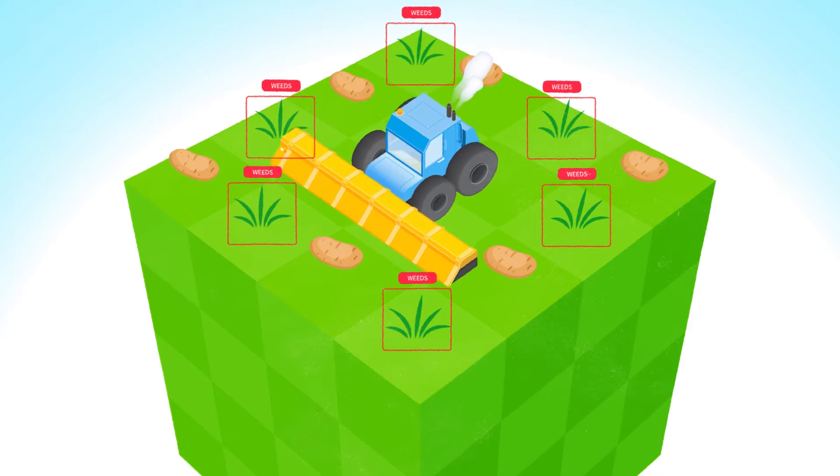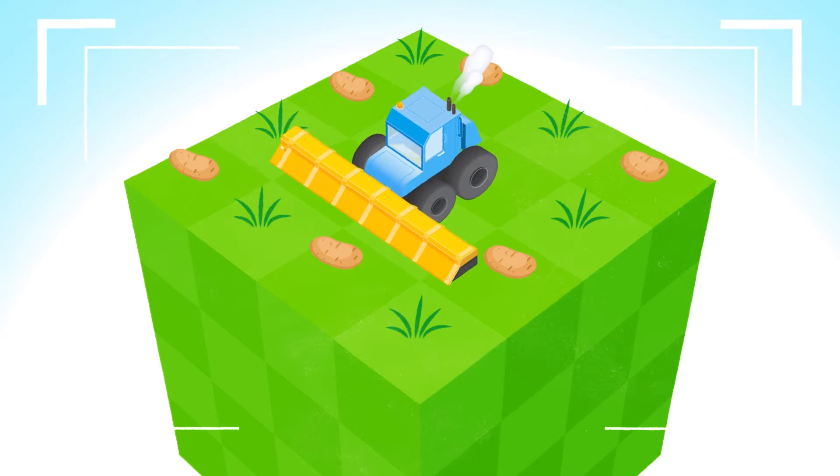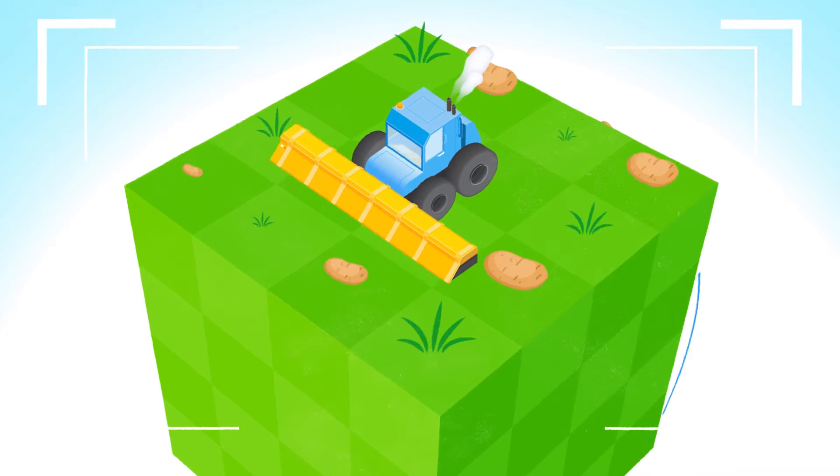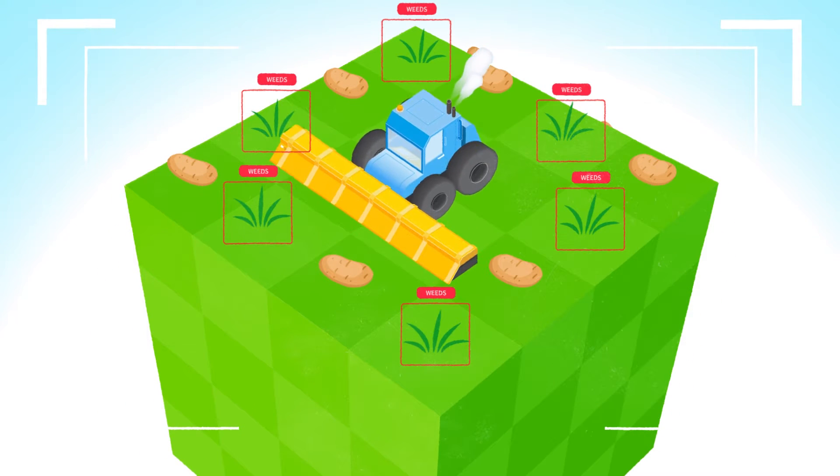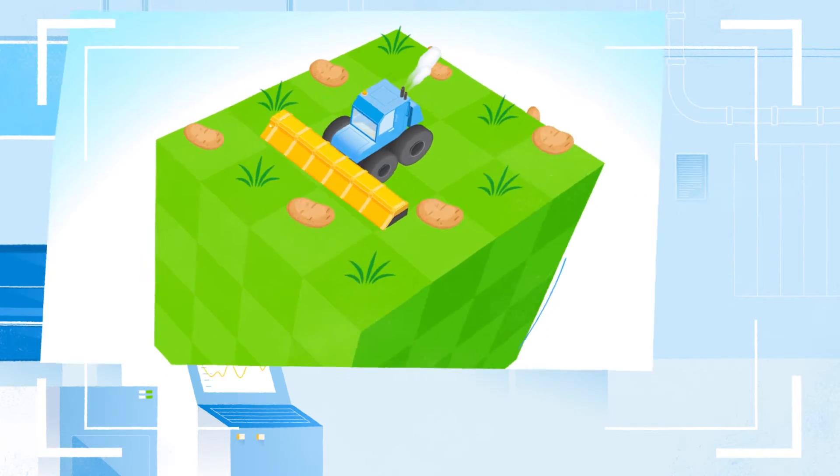AI machine vision can detect and spray pesticides on weeds directly without affecting nearby crops. This helps you protect your crops and keep yields up.